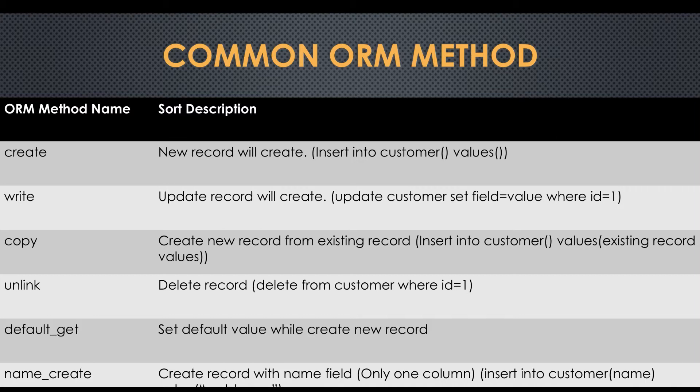The default_get method will get the default value of specific given fields. The name_create method will create a record set with one field — like the quick create option you see in many-to-one fields. After the user creates a record, they can also update the record set based on a condition. The flush method will help you to flush pending record set updates from the database side.